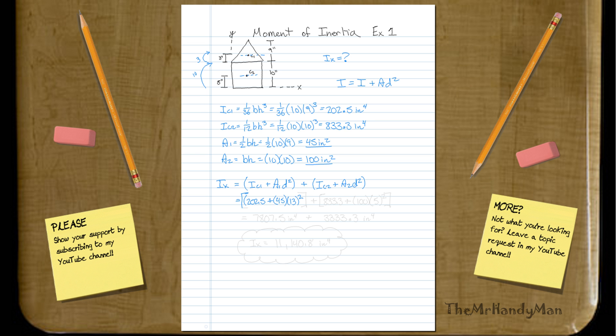So, this whole thing, plus the next one, which is going to equal eight hundred and thirty-three point three, plus the area, which is a hundred, times the distance, which is five squared.